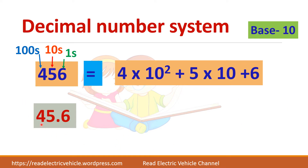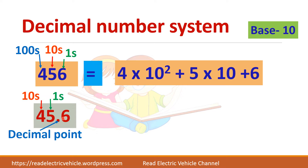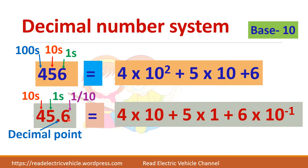Now take another example: 45.6 — the same number but with a decimal point included. When you keep a decimal point here, the value of the positions will change. Now 5 is in the 1's position and 4 is in the 10's position, while 6 will be in the 1/10th position, that is after the decimal point. So this can be written as 4 into 10 plus 5 into 1 plus 6 into 10 power minus 1, giving 40 plus 5 plus 0.6, which equals 45.6.